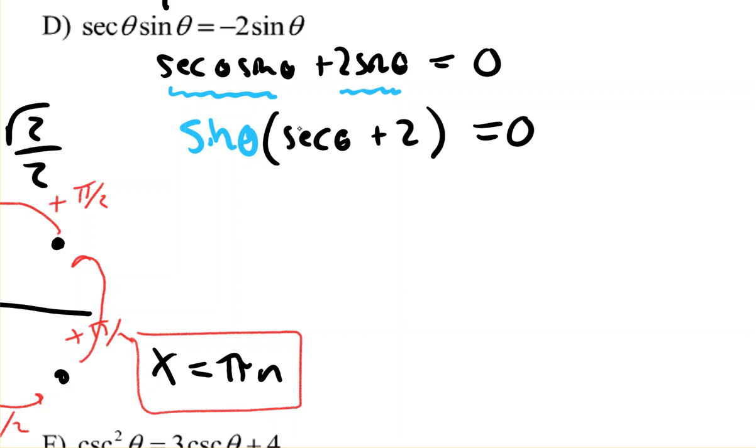And now, since it's this factor times that factor equals 0, it could be when this factor equals 0, or when this factor equals 0. And then this one needs to be solved.